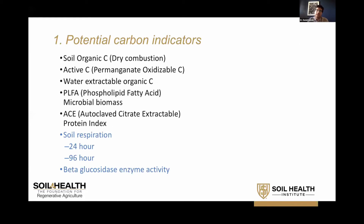There are eight carbon-related indicators that are part of this project. The first is soil organic carbon measured with dry combustion — a tier one indicator that has been used for a long time. We also measured active carbon, which is carbon oxidized by the chemical permanganate. And we can measure water extractable organic carbon: we shake the soil in water and see how much carbon comes out.